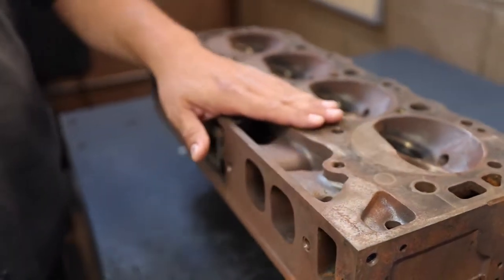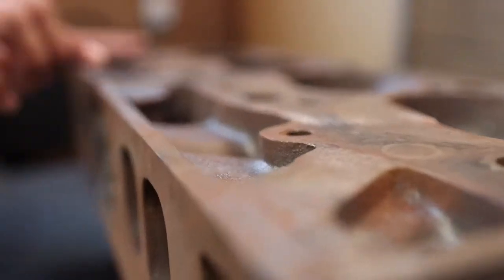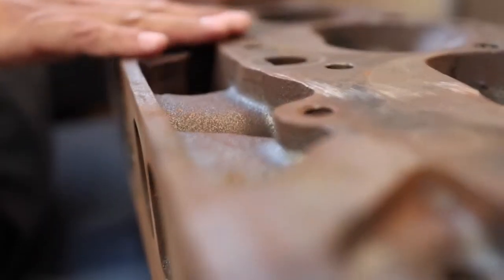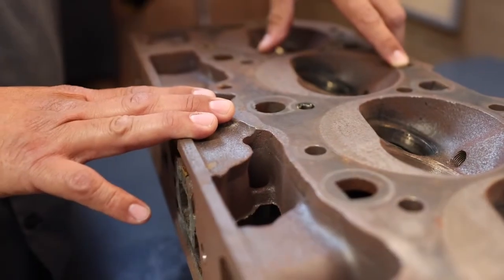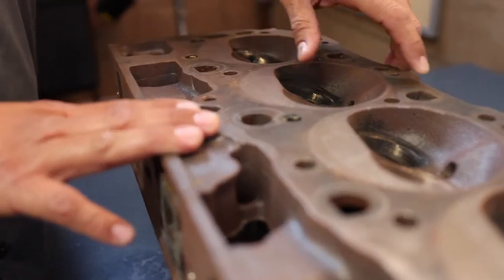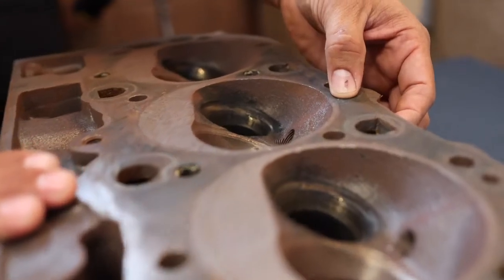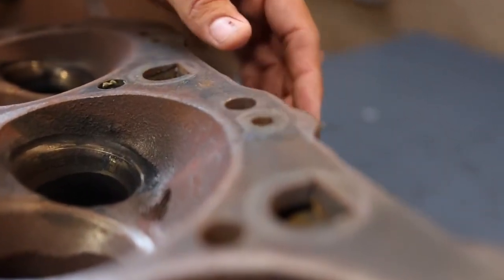The first thing we want to look at is the cylinder head surface. We want to make sure there's no big scratches, gouges, anything like that. And if we look closely, you can see there's still a little gasket material left on the cylinder head. There's some here, there's some down at the cylinder on the end, there's a little there.